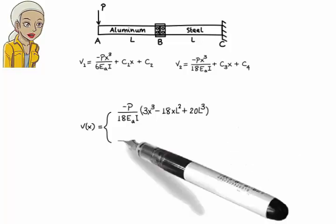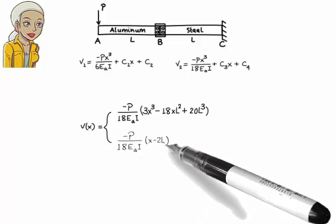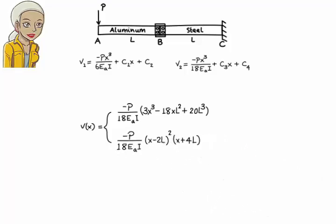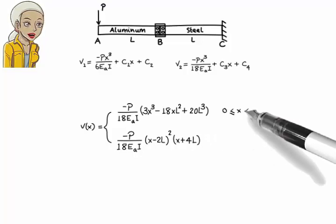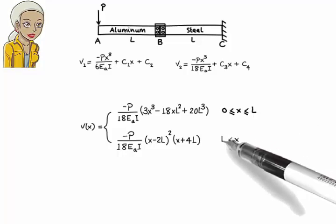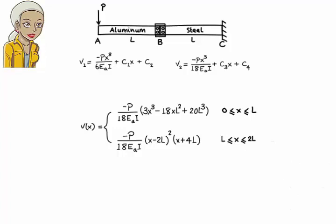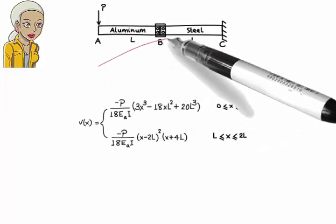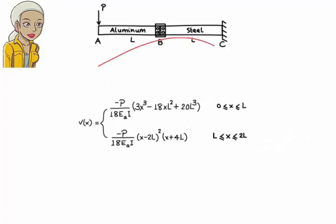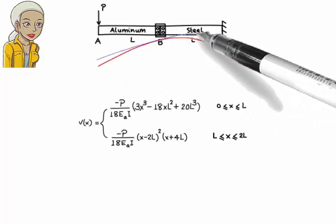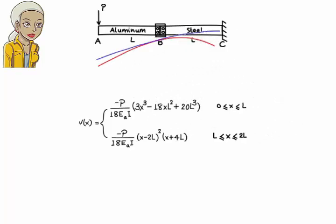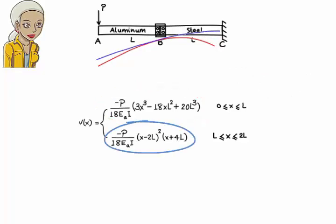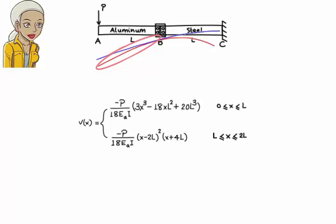Making proper substitutions in the deflection equations, we get V1 equals negative P over 18·E sub A·I times (3x cubed minus 18xL squared plus 20L cubed), and V2 equals negative P over 18·E sub A·I times (x minus 2L) squared times (x plus 4L). The deflection is given by V1 when x is between 0 and L, and by V2 when x is between L and 2L. When plotted, these functions define the beam's elastic curve.